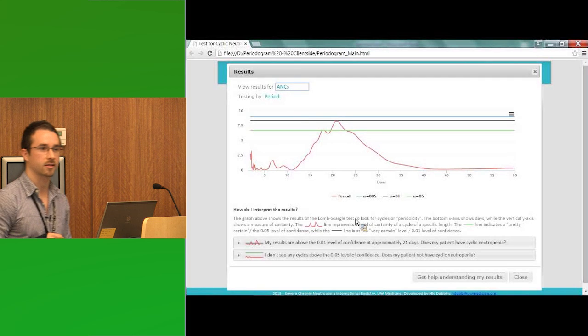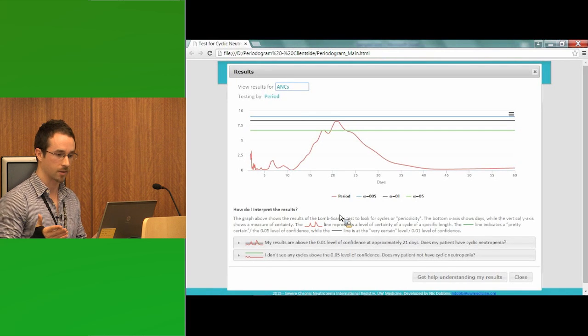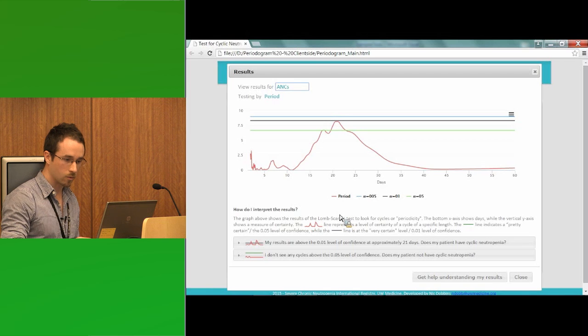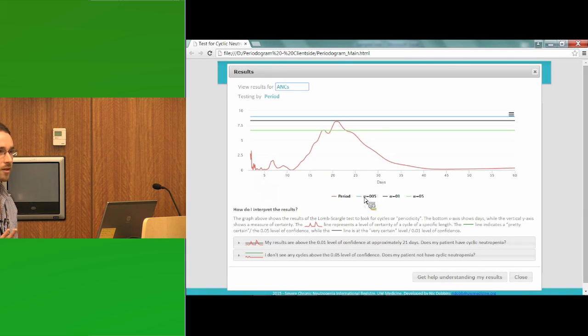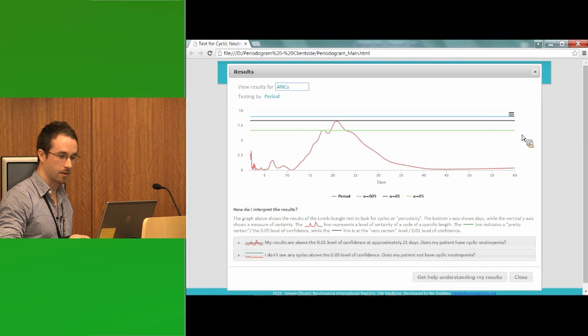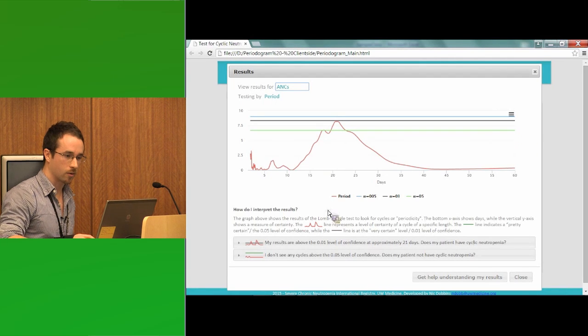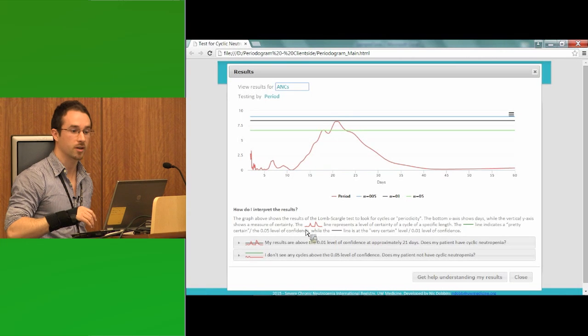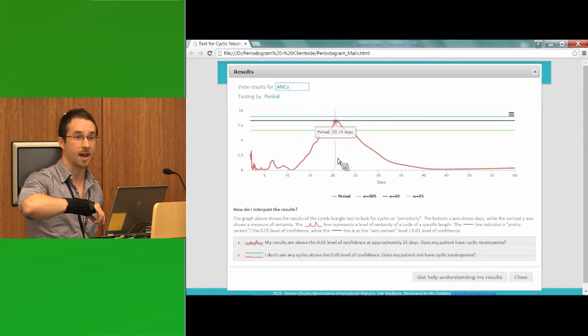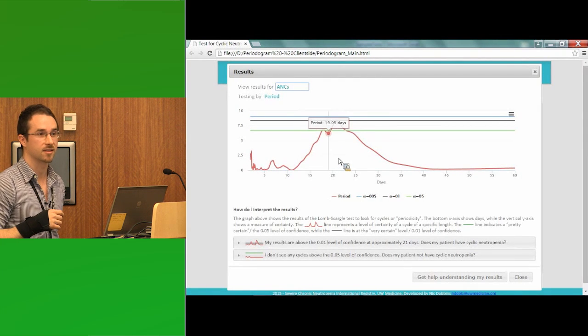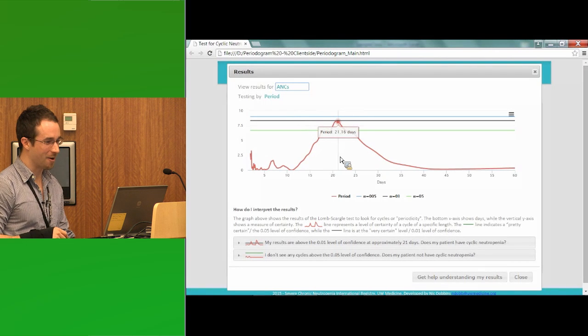So this is called the Lomb-Scargle test. And Dr. Dale and one of his colleagues worked for many years on using this within the context of giving, or understanding, cyclic neutropenia. And we can see the red line right here represents a level of certainty. I've tried to use spark lines, which I think are more intuitive. It's easier to understand the red line right here when it's a picture than actually spelling that out. So we can look and see that at the period of about what we would expect, about 21 days, we've got a peak. And that goes at just about the black line right there, which is, we're 99% very certain that that's statistically significant. And I do get a little nervous using phrases like that in front of biostatisticians, but that's what I understand it to be.